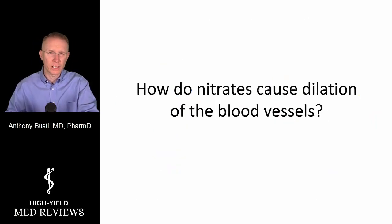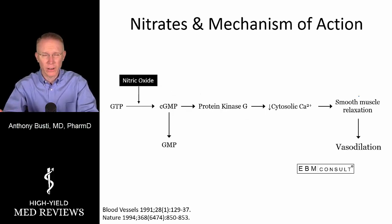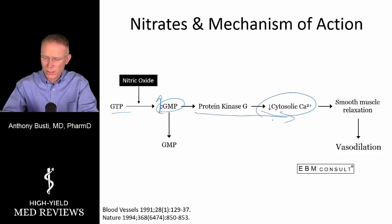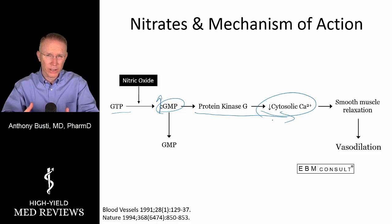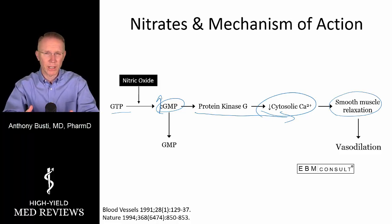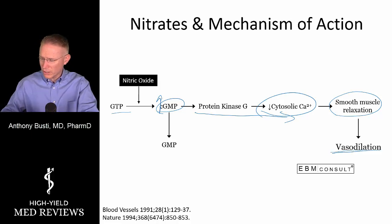How do nitrates actually cause vasodilation? Endothelial cells lining blood vessels release nitric oxide endogenously, or when we administer it, it converts GTP to cyclic GMP. Increases in cyclic GMP reduce cytosolic calcium. Since all muscles — smooth or skeletal — require actin-myosin interaction to contract, when cytosolic calcium is absent, actin and myosin relax, producing vasodilation. The level of administration influences which blood vessels are impacted, but vasodilation is the endpoint.